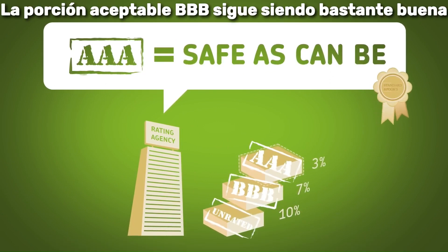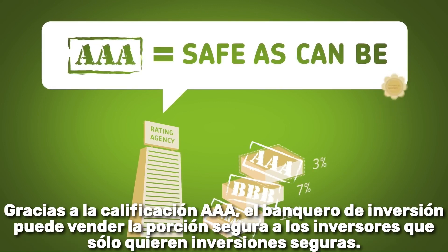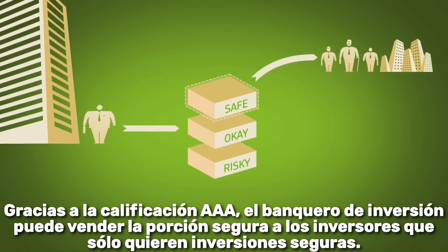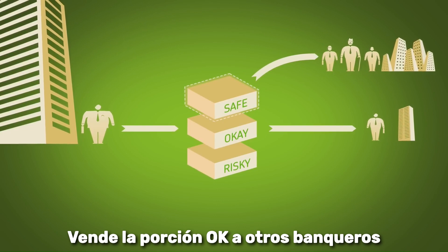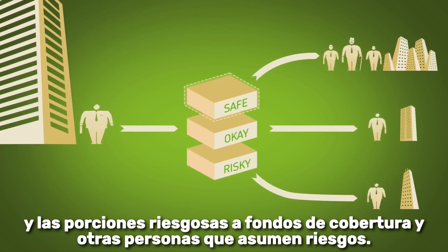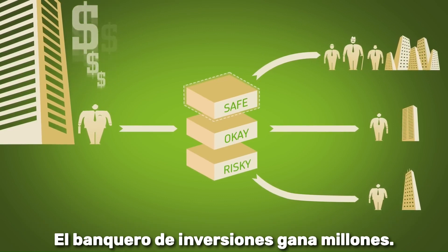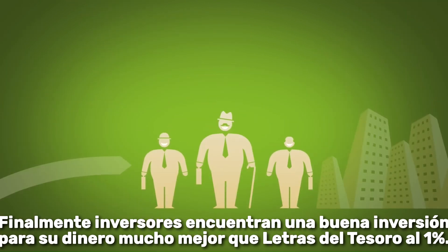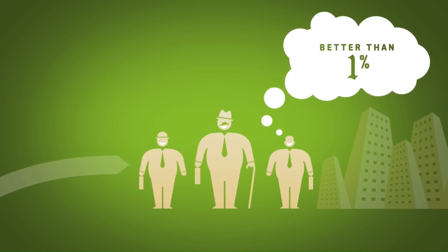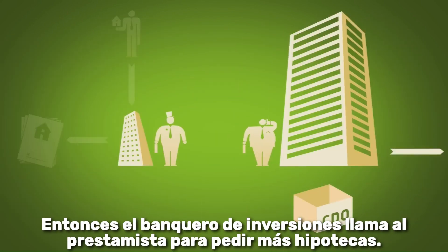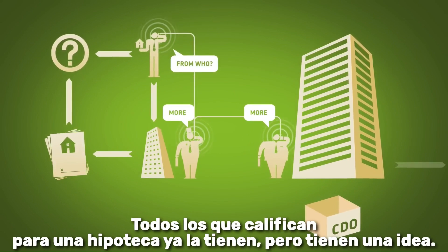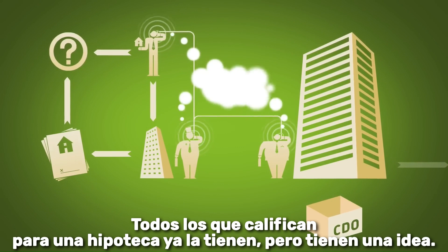The okay slice is rated BBB — still pretty good — and they don't bother to rate the risky slice. Because of the AAA rating, the investment banker can sell the safe slice to investors who only want safe investments. He sells the okay slice to other bankers and the risky slices to hedge funds and other risk-takers. The investment banker makes millions, repays his loans, and finally the investors have found a good investment — much better than the 1% Treasury bills. They're so pleased they want more CDO slices, so the investment banker calls up the lender wanting more mortgages. The lender calls up the broker for more homeowners, but the broker can't find anyone — everyone that qualifies for a mortgage already has one.